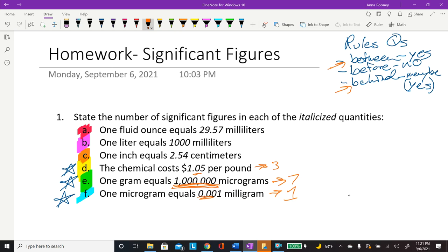Now we're gonna switch over to the problems that were not assigned. And so one fluid ounce equals 29.57 milliliters. There's no zeros. This is a pretty straightforward one. That is four.